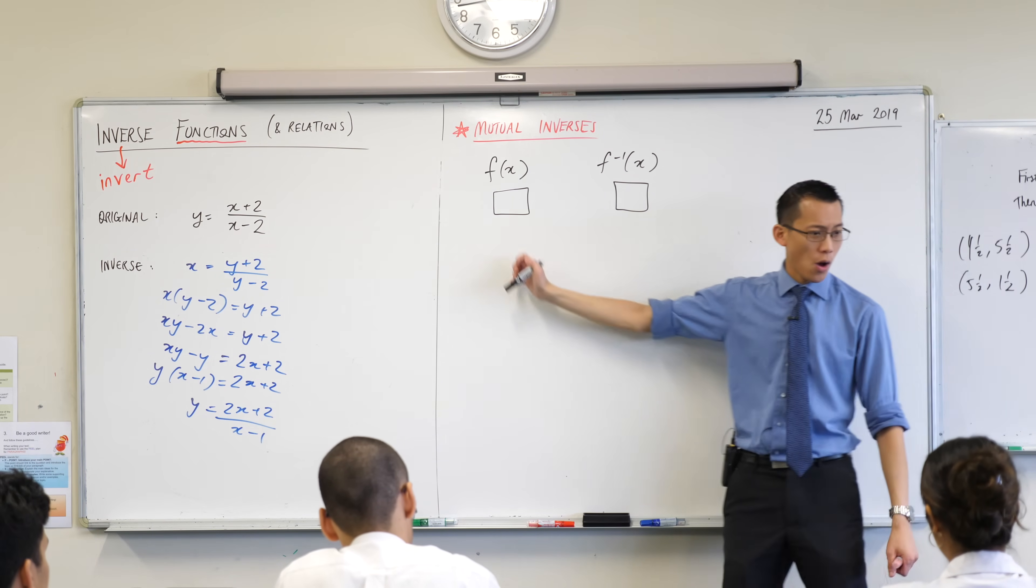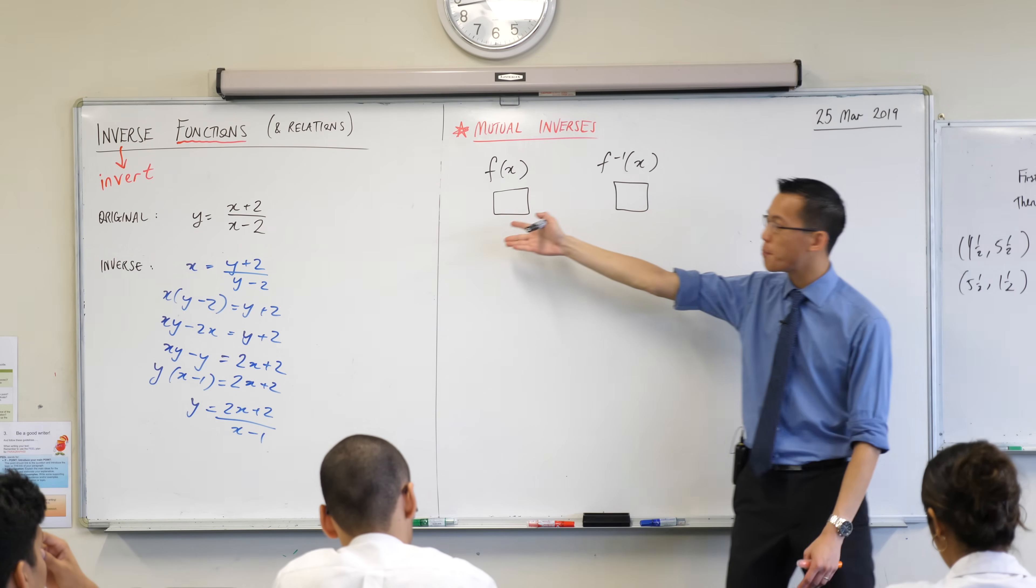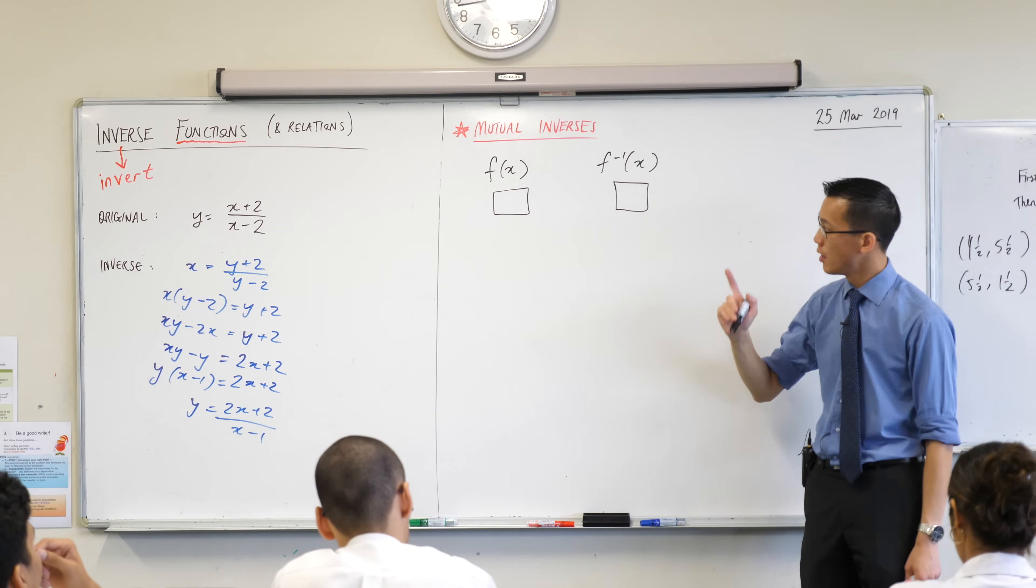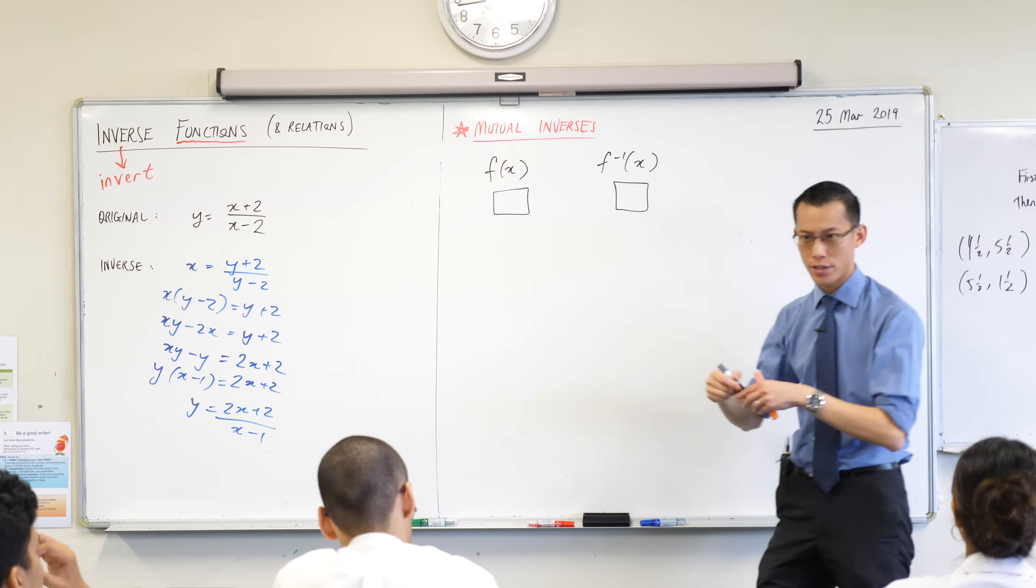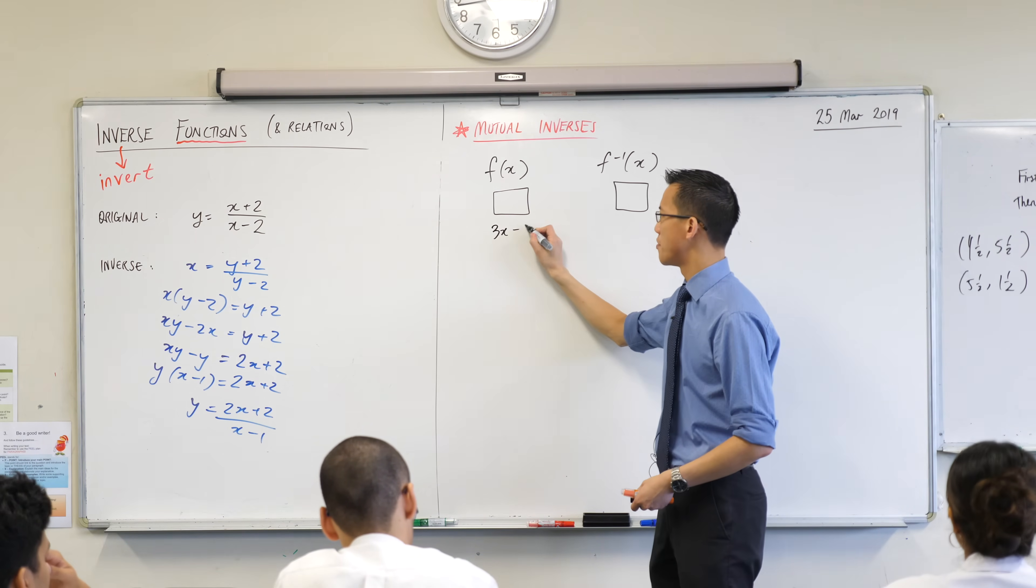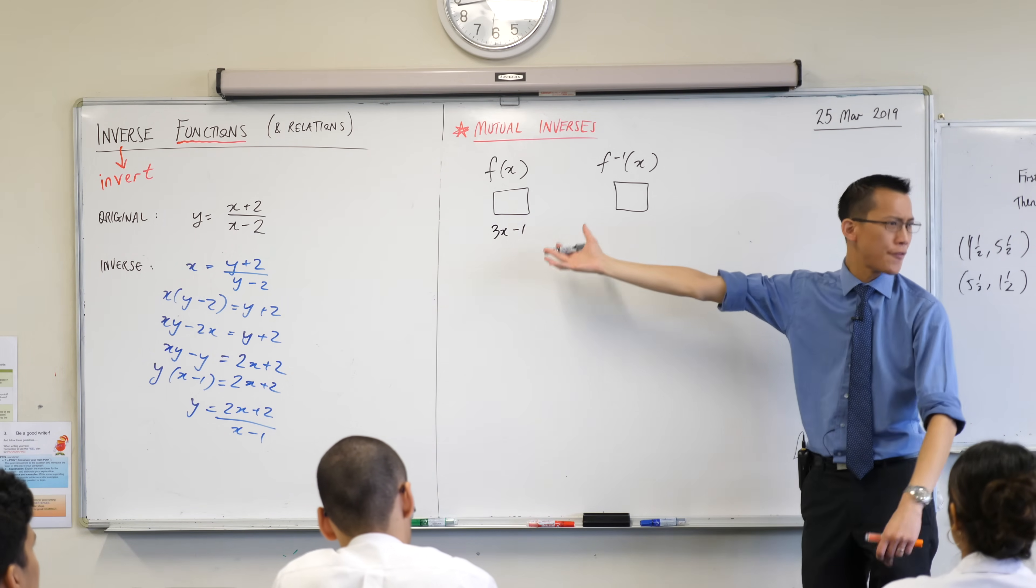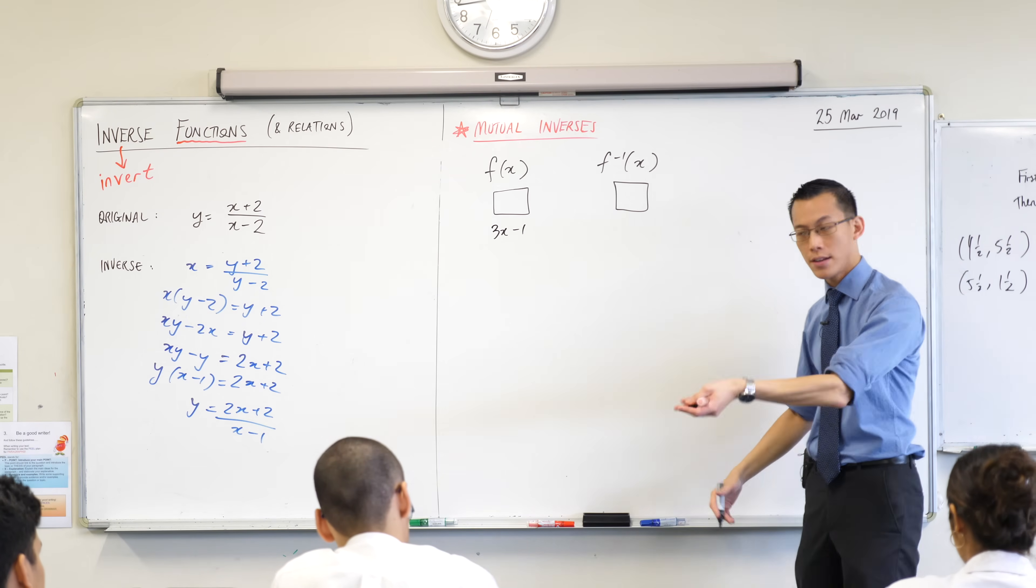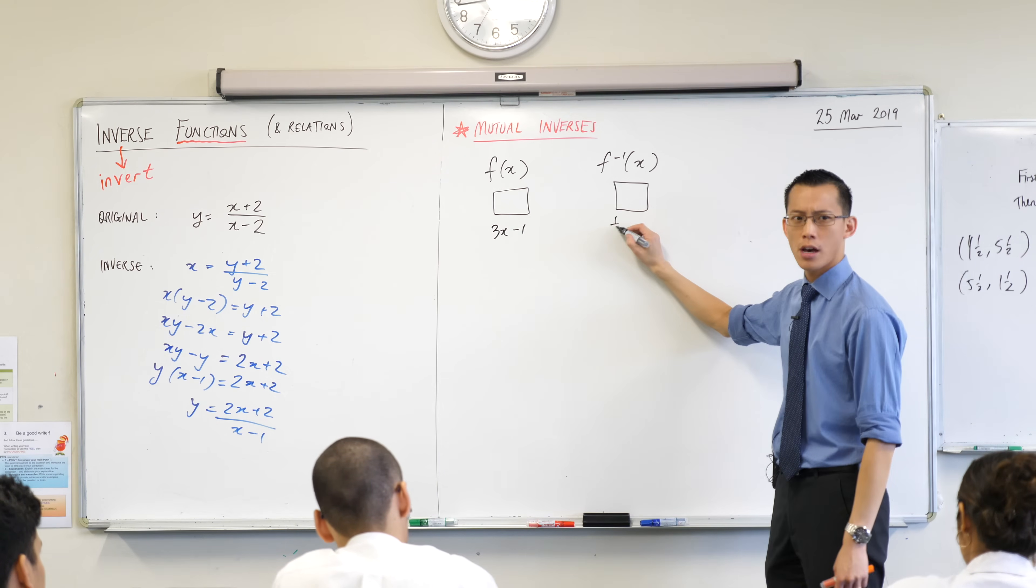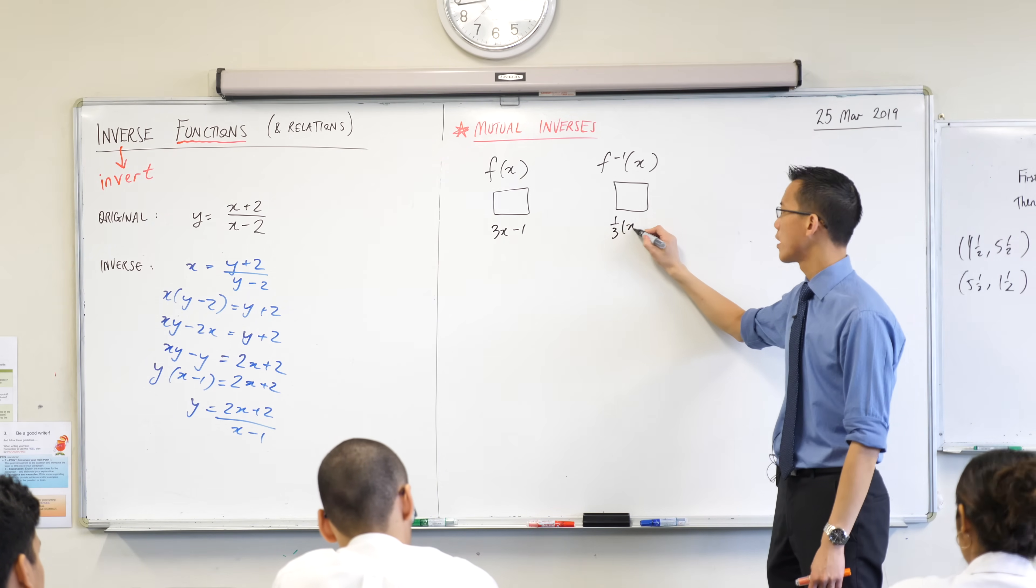Mutual inverses, what do I mean by this? When you have a function and you compare it to its inverse. One of the examples we looked at before was f(x) = 3x - 1, and we found that its inverse was a third x plus one.